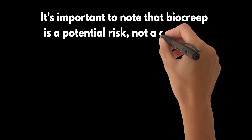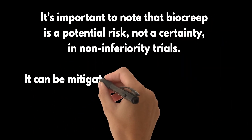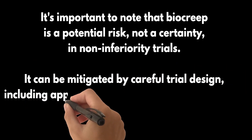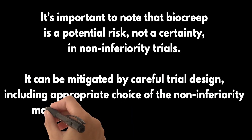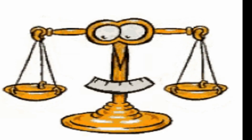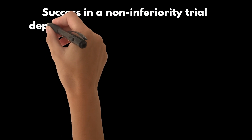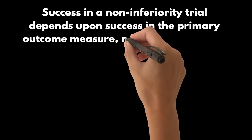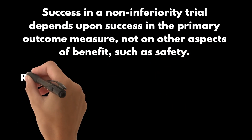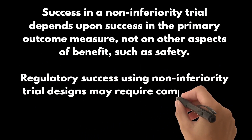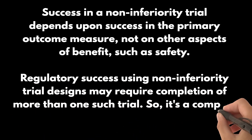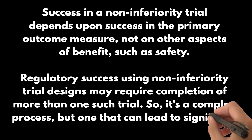It's important to note that bio-creep is a potential risk, not a certainty, in non-inferiority trials. It can be mitigated by careful trial design, including appropriate choice of the non-inferiority margin and the comparator treatment. The choice of the non-inferiority margin and how much of the existing treatment effect to preserve incorporates these other aspects of treatment viability. It's a delicate balance that requires careful consideration. But remember, success in a non-inferiority trial depends upon success in the primary outcome measure, not on other aspects of benefit such as safety. Regulatory success using non-inferiority trial designs may require completion of more than one such trial, but it can lead to significant advancements in treatment options.